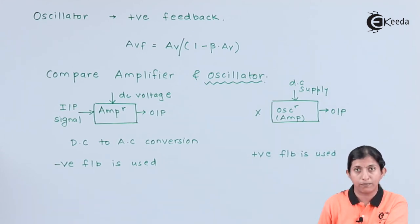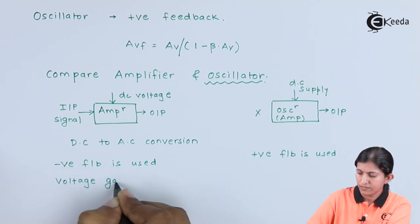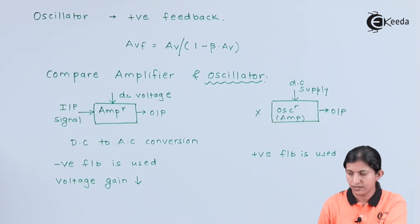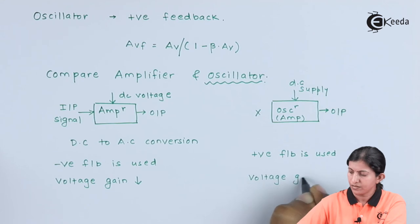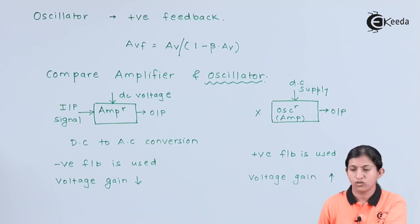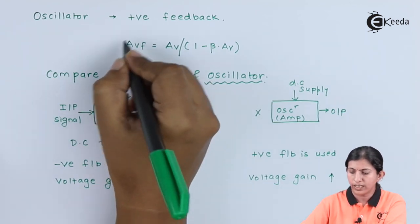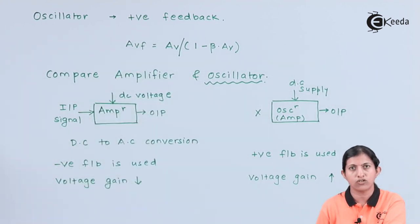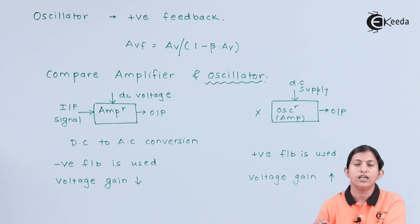In the case of an amplifier, voltage gain decreases. In the case of an oscillator, voltage gain increases. So in the oscillator, positive feedback is used, voltage gain increases, and no input signal is required.